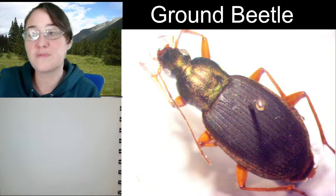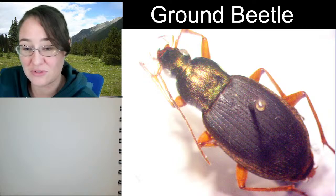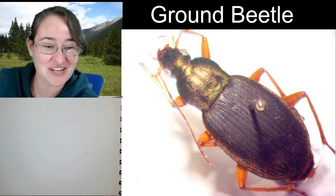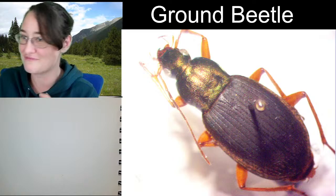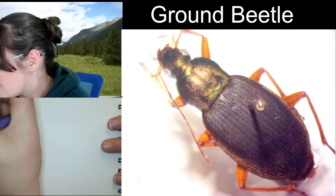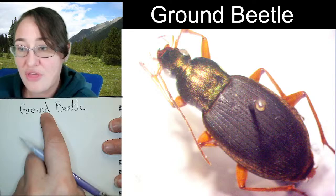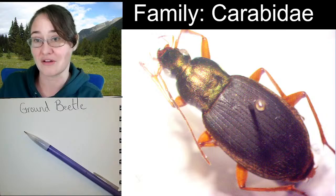We've got a ground beetle here. Ground beetle is our common name for this individual, but ground beetle is not a species-specific name. When you say ground beetle, you are actually referring to an entire family of insects, and that family is Carabidae. Carabidae are all of our ground beetles. If we flip this beetle over and look at it from a ventral point of view and look at the very hind leg, you can see that weird extra little piece at the base of the hind leg — that is an expanded trochanter.